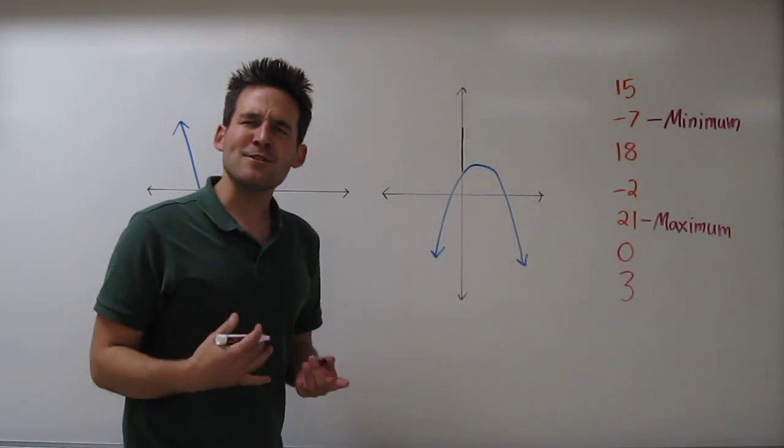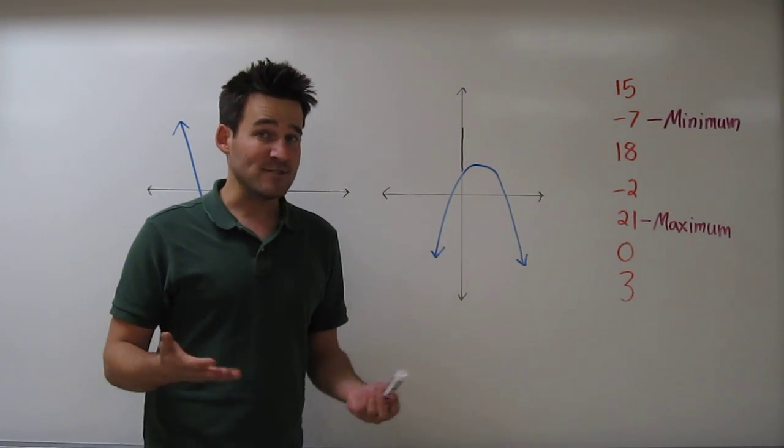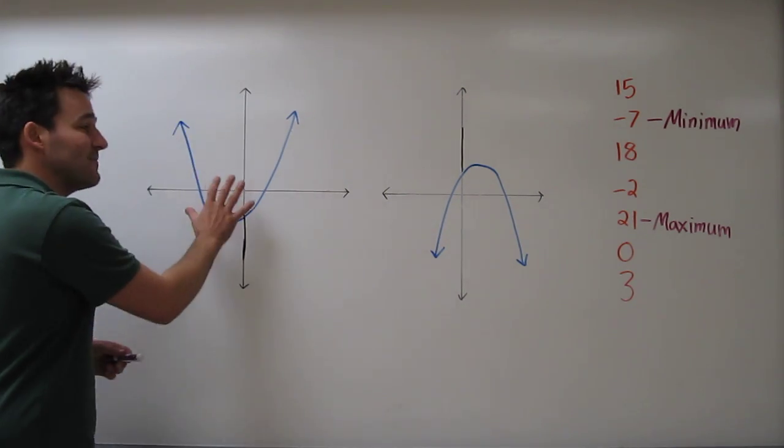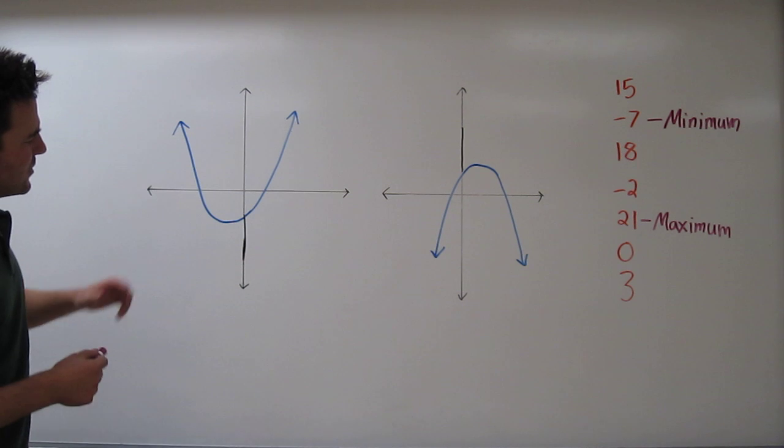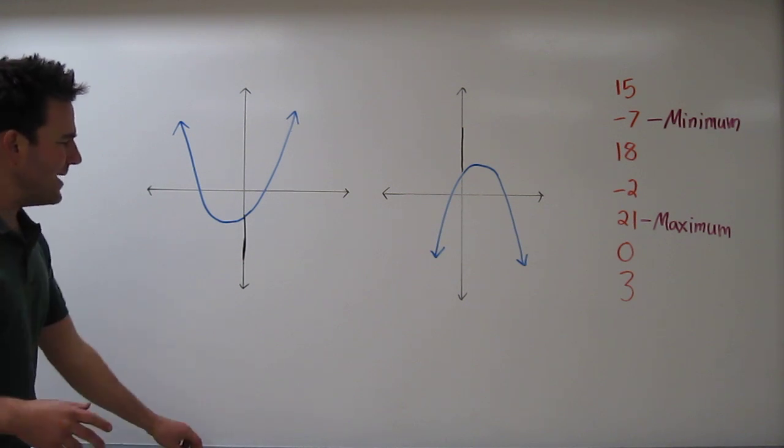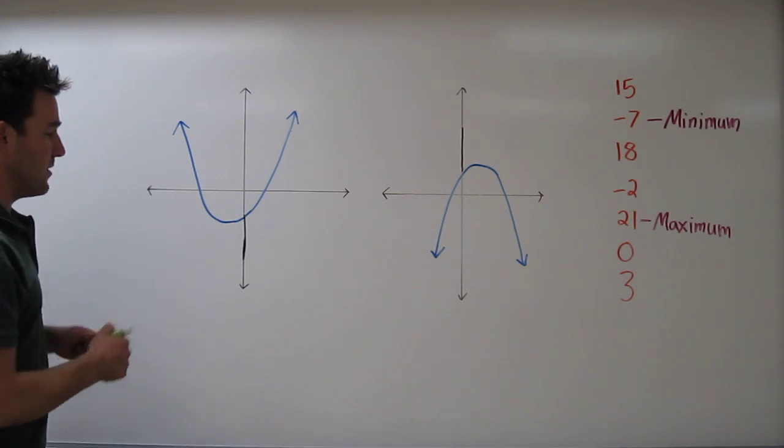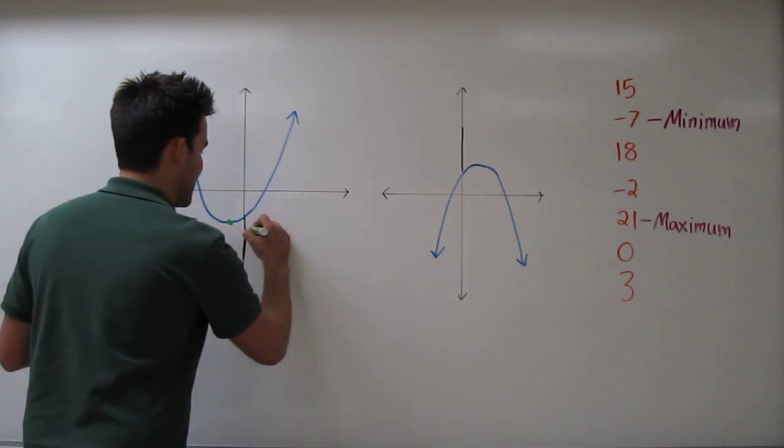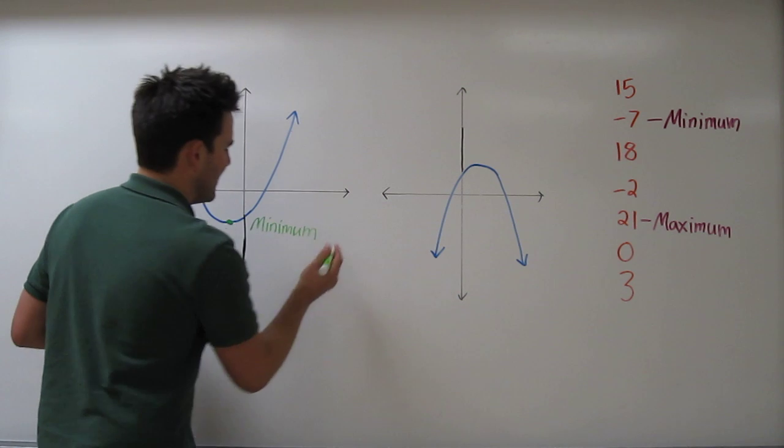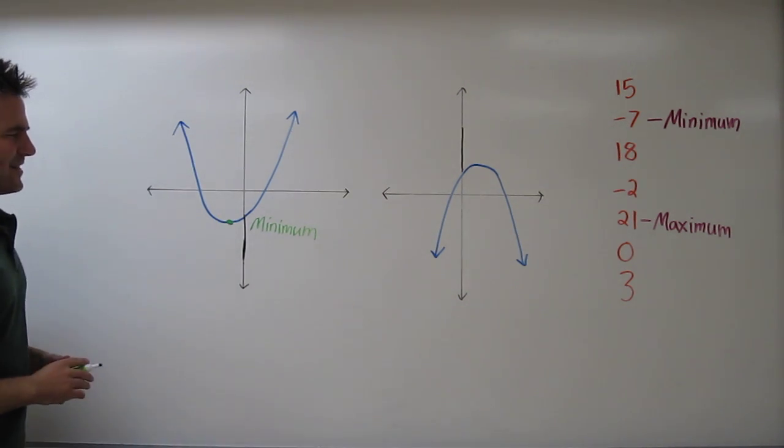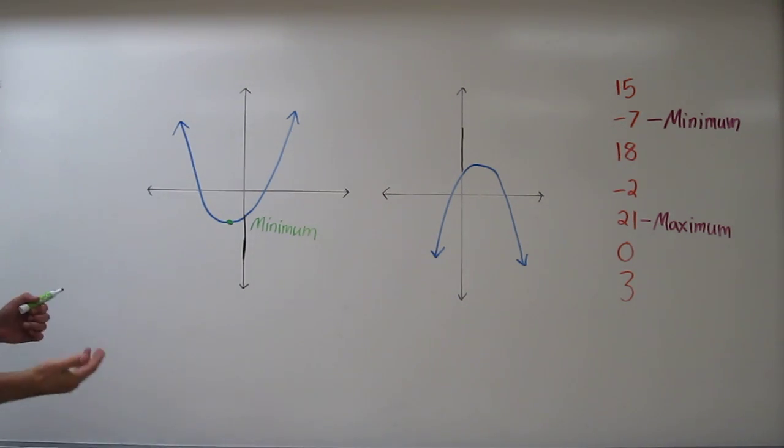Now we can also find the minimum and maximum of graphs of functions. Here we have two different parabola graphs. And by looking at this first one, I see that the minimum value, or the lowest value on the graph, is right here. So let me write minimum. Now to find the maximum on this first graph, it's actually kind of difficult.